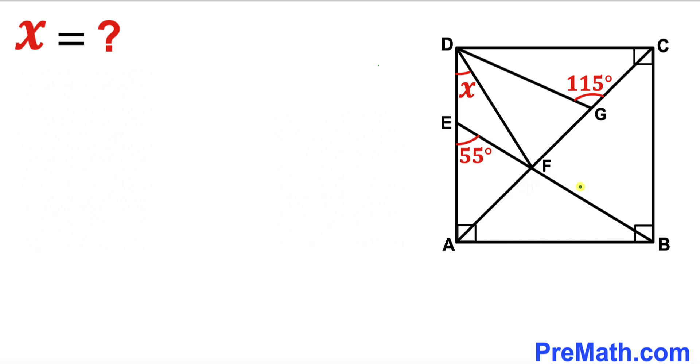Line segment EB makes an angle of 55 degrees, line segment DF makes an angle of x, and line segment DG and diagonal AC make an angle of 115 degrees. Our task is to calculate angle x.